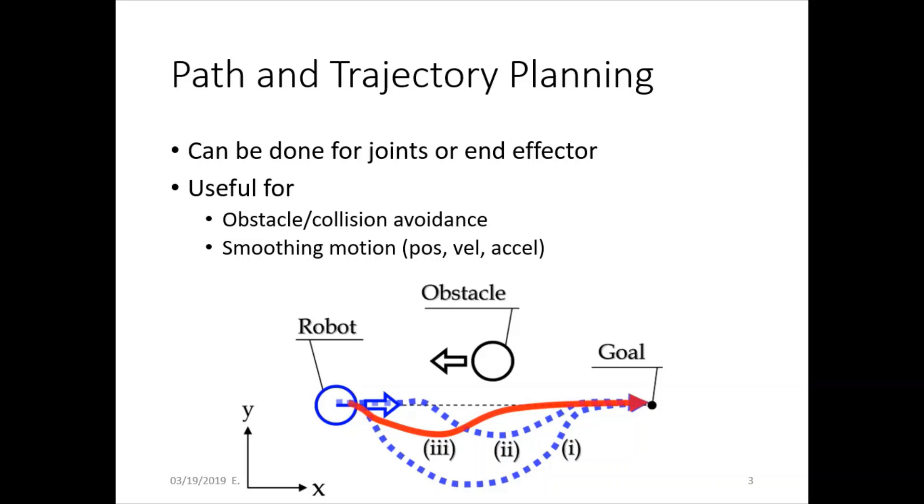The robot even needs to avoid itself because having something on the end effector, depending on how the object that the robot is picking up is shaped, it might be easy for it to hit other parts of the robot if it's very large.